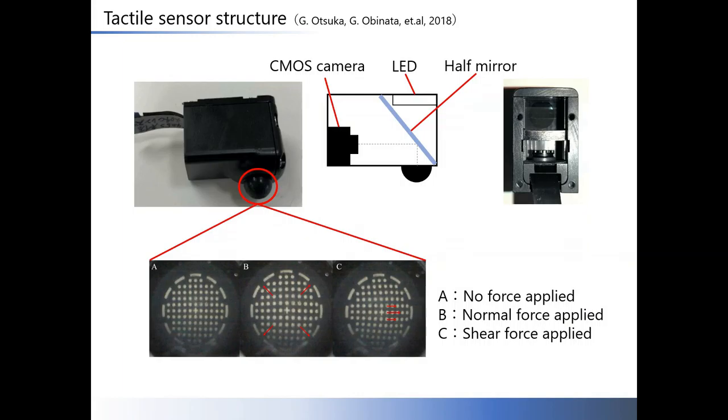This slide shows the structure of the tactile sensor used in this study. The tactile sensor consists of a silicon touchpad of 7mm diameter with black film on the outside surface, a CMOS camera and LED lights that illuminate the interior, and a half mirror. The inside surface of the touchpad is printed with regularly arranged small dots.